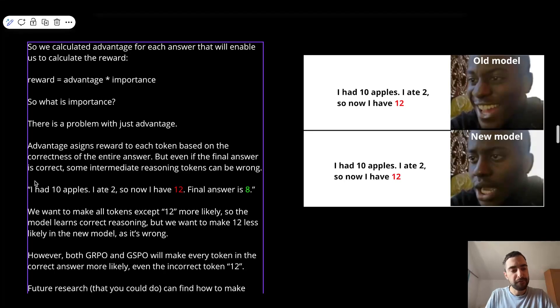So now the final answer is correct. So the whole answer will get rewarded and reinforced. But we have a reasoning mistake here. So we want to deal with this somehow. So we would like to reinforce all of these tokens, but make the token 12 less likely. However, both GRPO and GSPO cannot actually make a single token less likely. They both are going to make everything more likely.